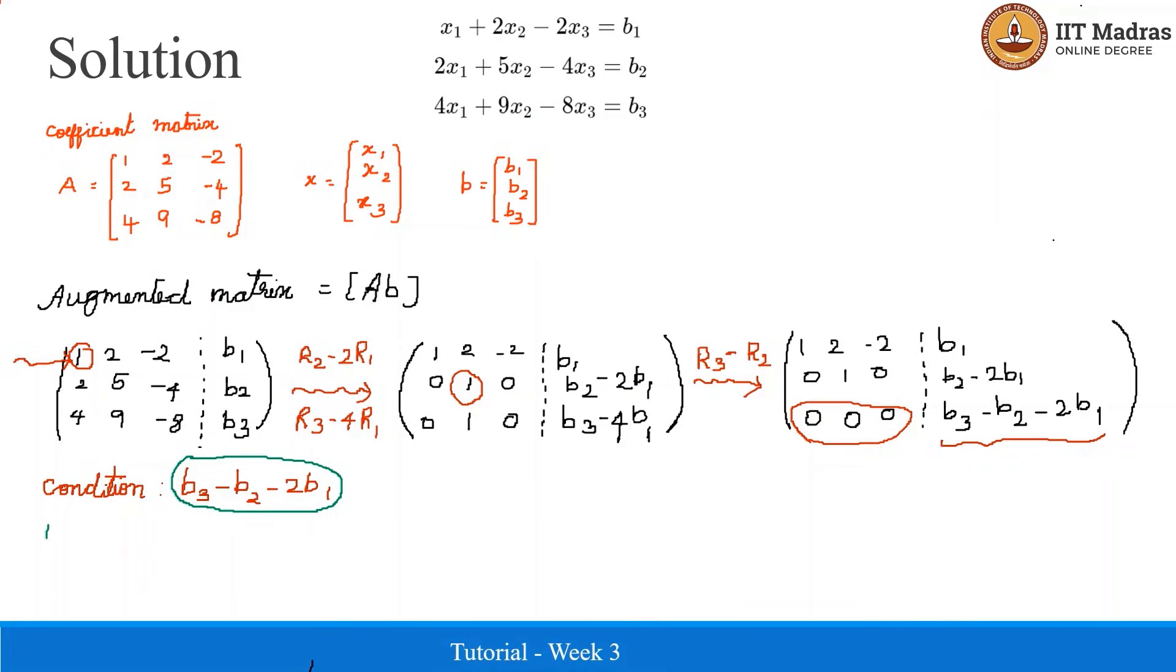Now we are given values for B1, B2, and B3. Let us check whether we satisfy the condition or not. Substituting these values in this condition, we get 5 minus (minus 1) minus 2 times 3. This is equal to 6 minus 6, which equals 0. Thus, the condition is satisfied.